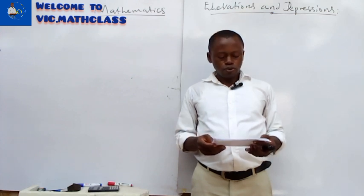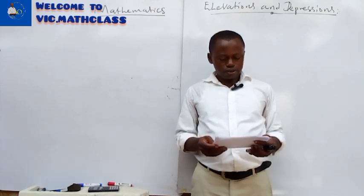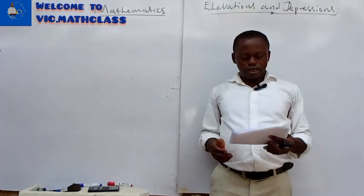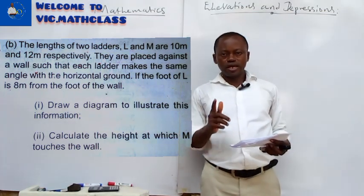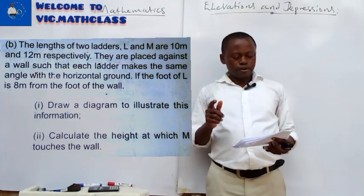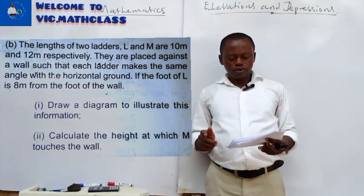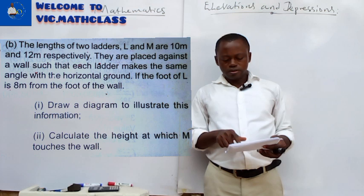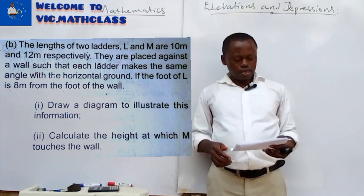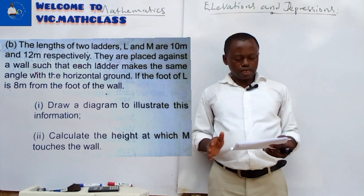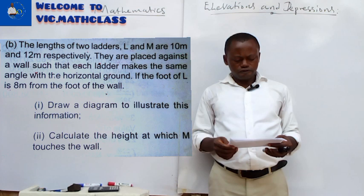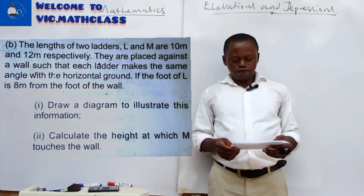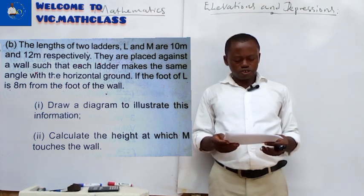In this class we want to look at this question. The lengths of two ladders L and M are 10 meters and 12 meters respectively — so L is 10 meters and M is 12 meters. They are placed against a wall such that each ladder makes the same angle with the horizontal ground. If the foot of L is 8 meters from the foot of the wall...